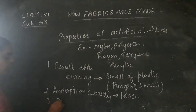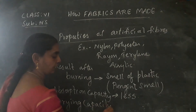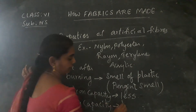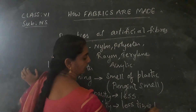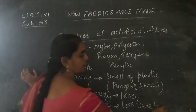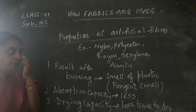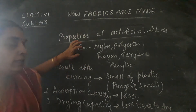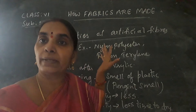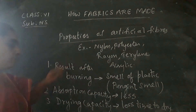Next, coming to drying capacity. The drying capacity of artificial fibers — they take less time to dry. Most artificial fibers take less time to dry, except some like rayon. Even so, when compared to natural fibers like jute, wool, and cotton, they take less time to dry.